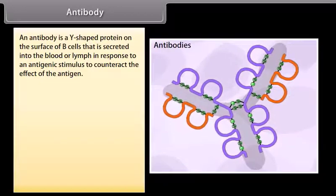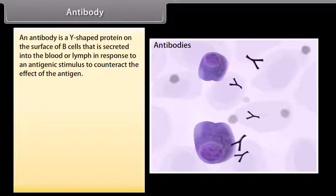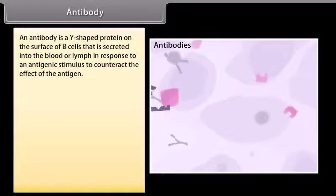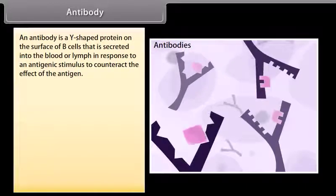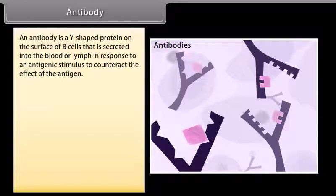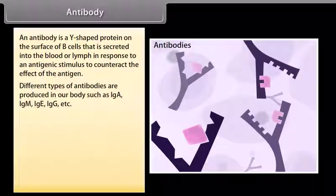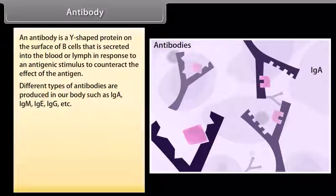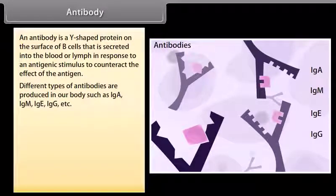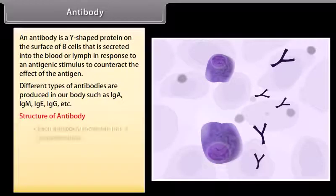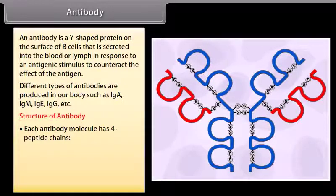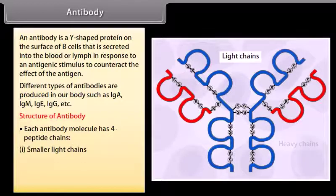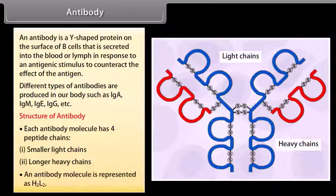An antibody is a Y-shaped protein on the surface of B-cells that is secreted into the blood or lymph in response to an antigenic stimulus to counteract the effect of the antigen. Different types of antibodies are produced in our body such as IgA, IgM, IgE, IgG, etc. Each antibody molecule has four peptide chains: smaller light chains and longer heavy chains, and is represented as H2L2.